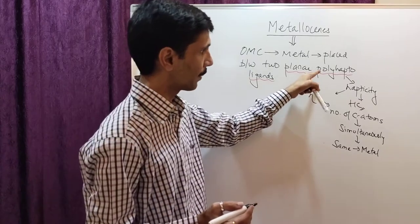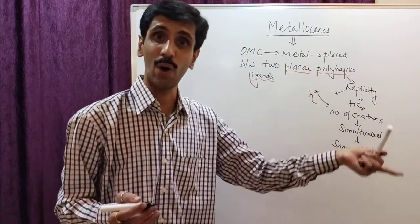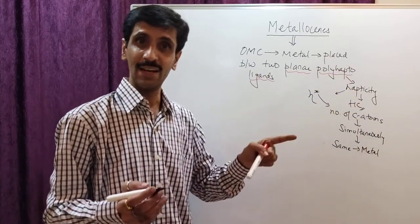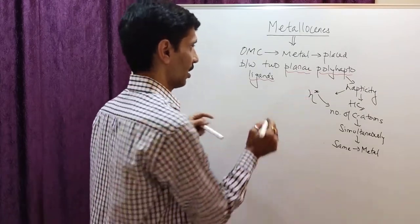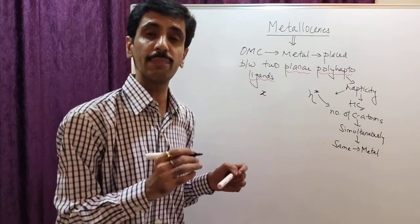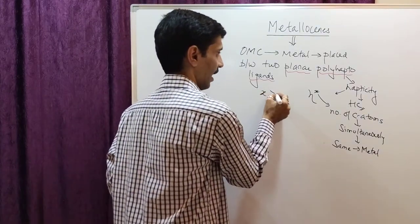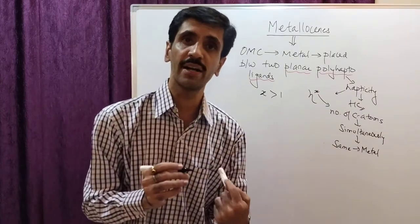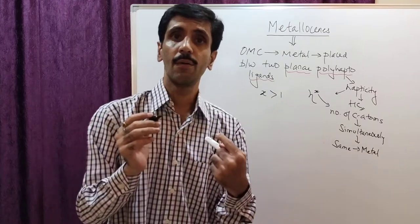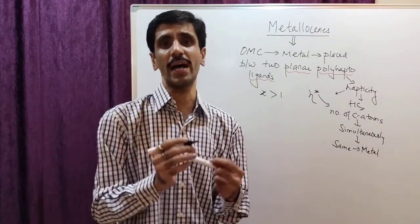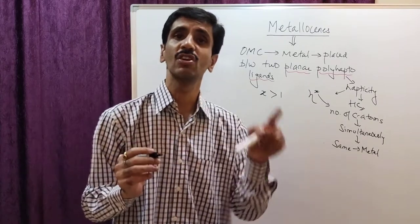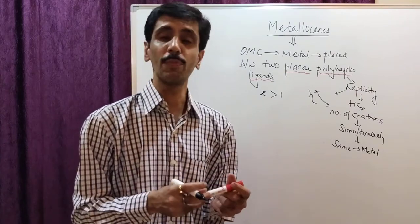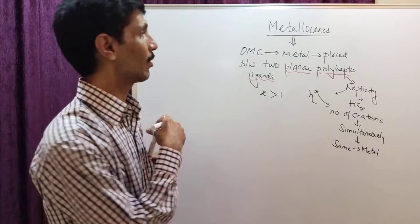So this is what hapticity is all about. When I use the word 'poly-hapto,' poly means more than one, and hapto is related to hapticity where a hydrocarbon behaves as a ligand. So poly-hapto means the value of x is greater than one — in other words, at least two carbon atoms are simultaneously attached to the same metal. That is a poly-hapto ligand.